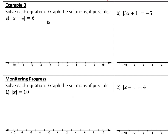Example 3: solve the equation and graph the solutions. We've got the absolute value of x minus 4 equals 6. The absolute value is already isolated. So x minus 4 could be a positive 6, or it could be negative 6. Solving the first: add 4 to both sides, x equals 10. Solving the second: add 4 to both sides, x equals negative 2.